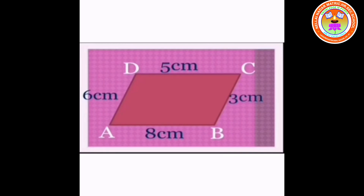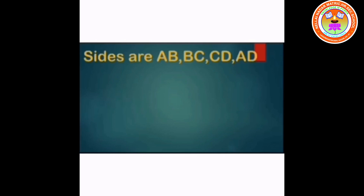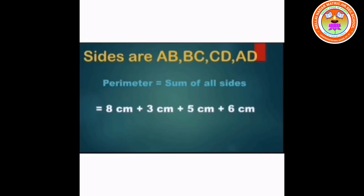Sum 2: This figure is a parallelogram with sides AB equal to 8 cm, BC equal to 3 cm, CD equal to 5 cm, and DA equal to 6 cm. Perimeter is equal to the sum of all the sides: 8 plus 3 plus 5 plus 6. Perimeter is equal to 22 cm.